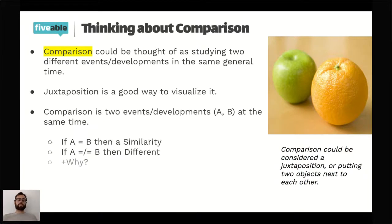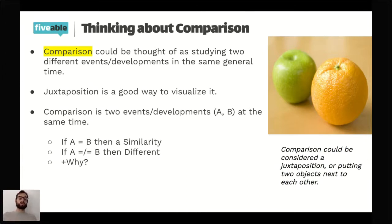For those who are more logically or mathematically inclined, you can think about comparison as a simple formulation. Think of two events or developments as A and B. If A equals B, there's a similarity. If A does not equal B, there's a difference — and of course you have to explain why. This is a good way to think about it as it applies to developments, events, and other historical evidence.